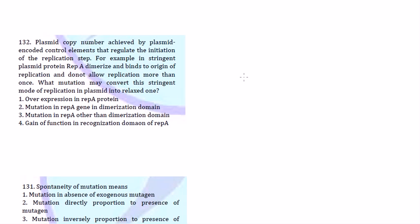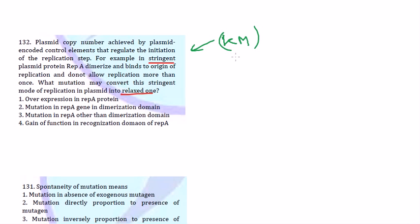The next question: a plasmid copy number is regulated by plasmid-encoded control elements that inhibit replication. In a stringent plasmid, the Rep A protein dimerizes and binds to the origin of replication, not allowing replication more than once. What mutation may convert this stringent mode of replication into a relaxed one? Two modes of replication are described: in stringent mode, Rep A dimers bind the origin and block replication. You need to know what stringent and relaxed modes are — I call this a knowledge-memorizing or KM-type question.